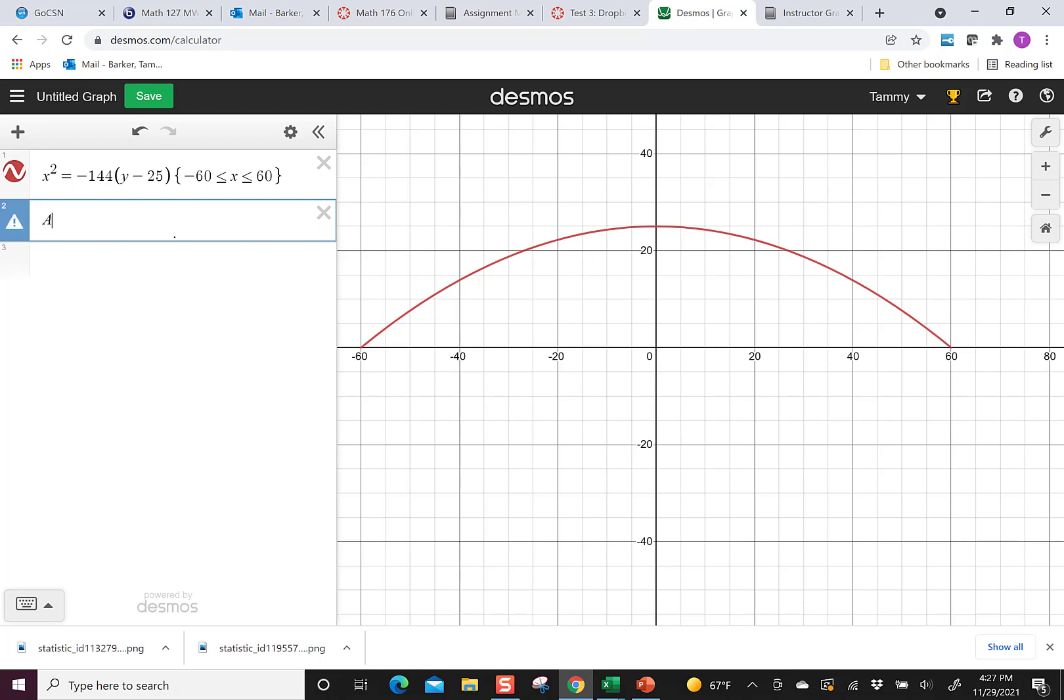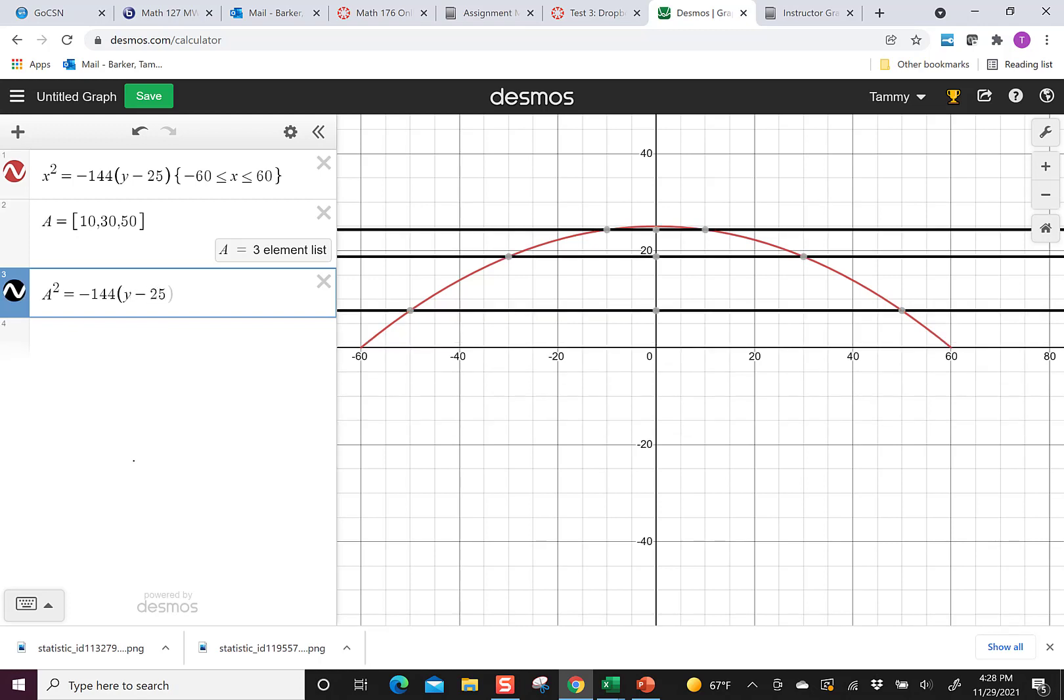Remember we want to see what happens at 10, 30, and 50. So I'm going to make a little list. I'm going to put a equals brackets 10, 30, and 50. And then watch, I'm going to say a squared because those values are x equals negative 144, and then I'm going to do y minus 25, and then watch, it puts them in. So if I could show you, there's 10, 24.306. That's what we got. The next one at 30 is 18.75, and at 50 is 7.639.